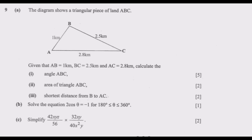The diagram shows a triangular piece of land ABC. Given that AB equals 1 kilometer, BC equals 2.5 kilometers, and AC equals 2.8 kilometers. We need to: (1) calculate angle ABC, (2) find the area of triangle ABC, (3) find the shortest distance from B to AC. We also solve the equation 2cosine(θ) = -1 for the range 180° ≤ θ ≤ 360°, and simplify a given expression.